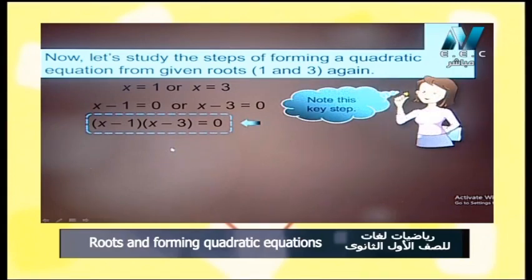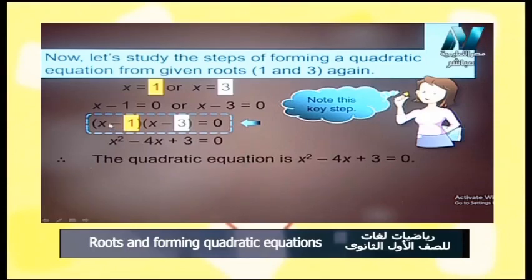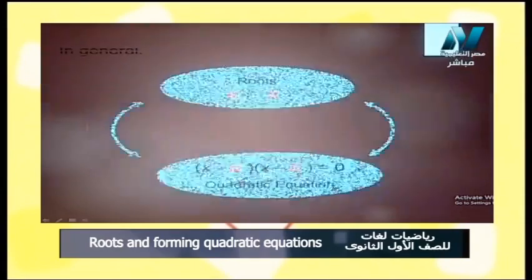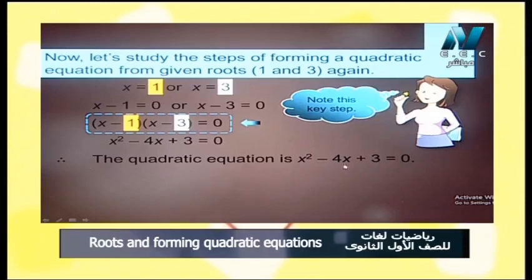Note these key steps. We have the two roots 1 and 3. You put x minus 1 multiplied by x minus 3, and the answer equals 0. Expanding: x times x equals x², x times negative 3 equals negative 3x, negative 1 times x equals negative x, and their sum equals negative 4x. Negative 1 times negative 3 equals positive 3. So the quadratic equation is x² minus 4x plus 3 equals 0.